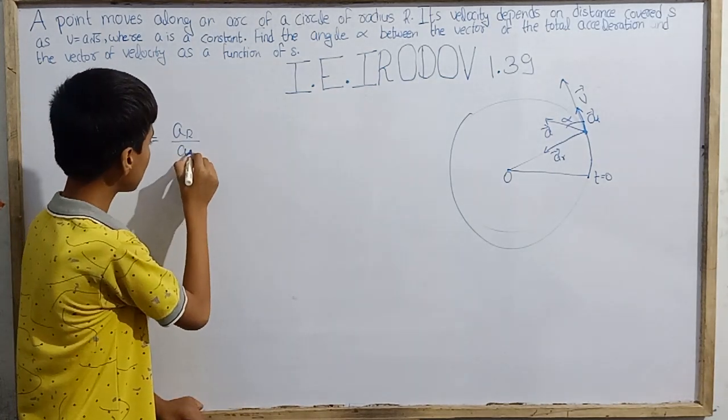So here we can easily find this. We can use this equation: tangent of angle alpha will be the radial component of acceleration divided by the tangential component of acceleration.